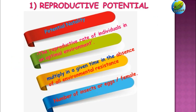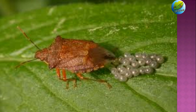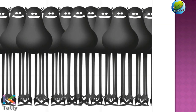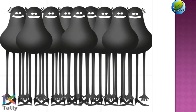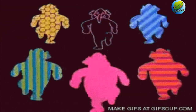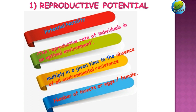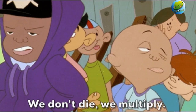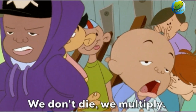Reproductive potential is otherwise called as potential natality, which means the ability of the insects to multiply in a given time in the absence of all environmental resistance, or it is the reproductive rate of individuals in an optimal environment where there is no struggle at all.